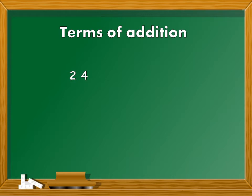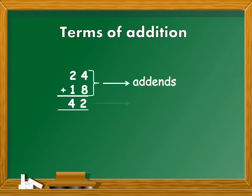Let us quickly revise the terms used for the numbers in addition, that is the terms of addition. Considering the same example, you added 24 books plus 18 books to get a total of 42 books. So here the numbers 24 and 18 which you added are called addends. And 42, the answer that you got, is called sum.